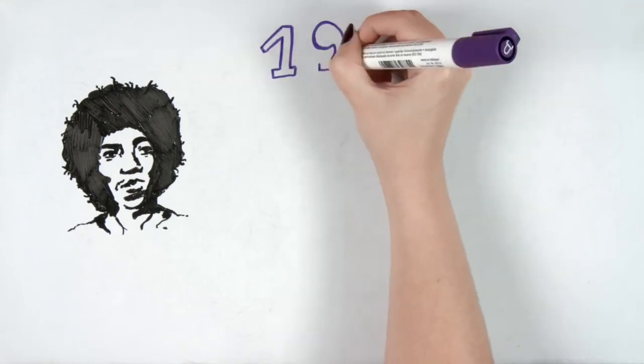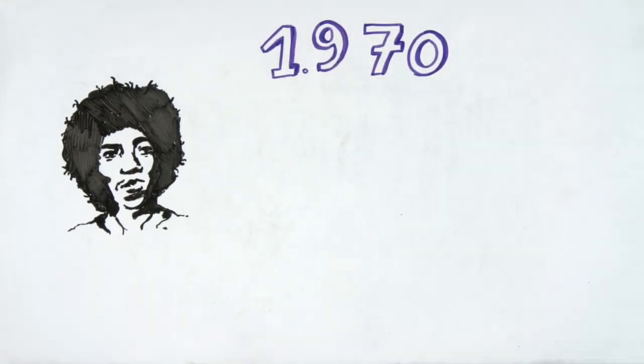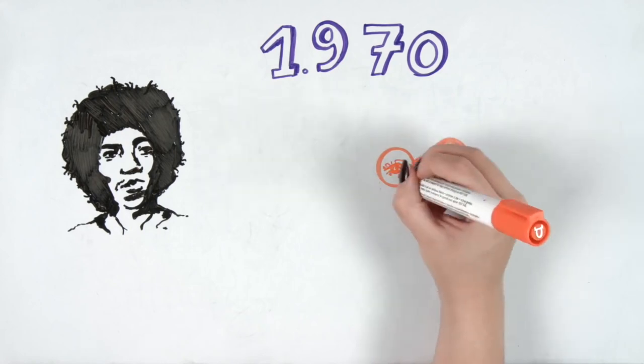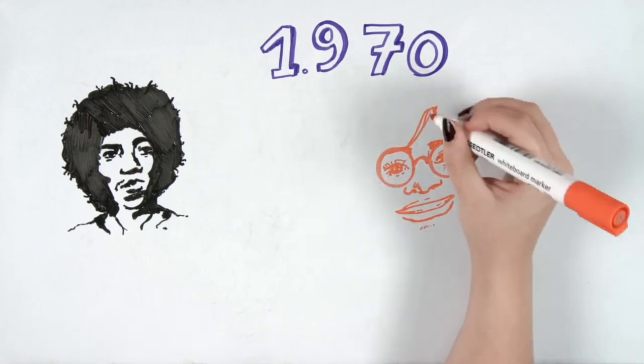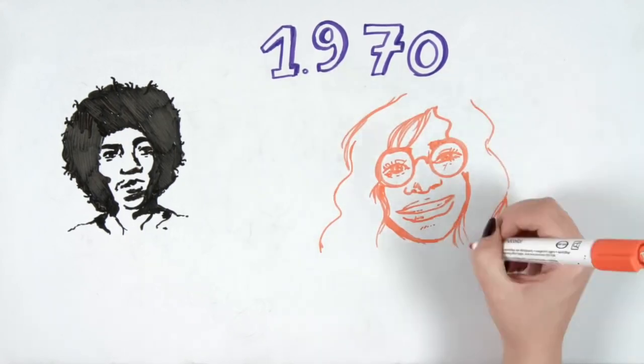1970 was an especially dark year for music. If Hendrix died in September of that year, unfortunately the music industry would have to say goodbye to another of its great stars of the time very soon.